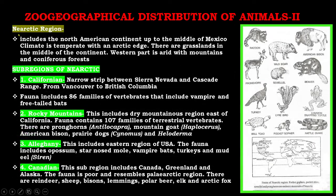The next region is the Nearctic region, which includes the northern North American continent up to the middle of Mexico. The climate is temperate with an Arctic edge. There are grasslands in the middle of the continent; the western part is arid with mountains and coniferous forest. It is divided into sub-regions. Number one is the California sub-region, a narrow strip between the Sierra Nevada and Cascade Range from Vancouver to British Columbia. Fauna includes 86 families of vertebrates, including vesper bats and free-tailed bats.